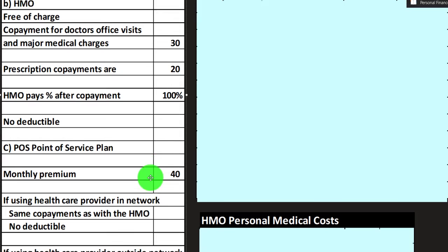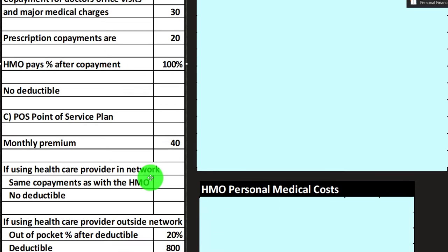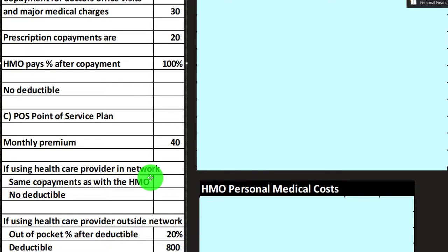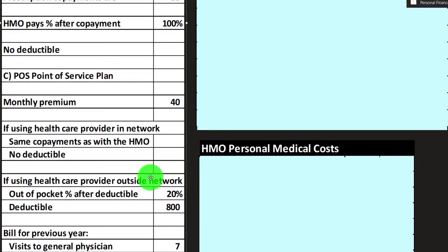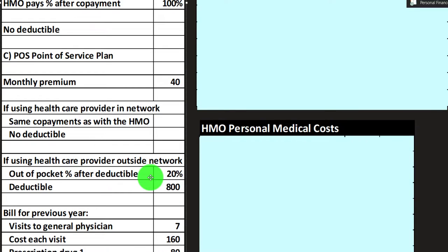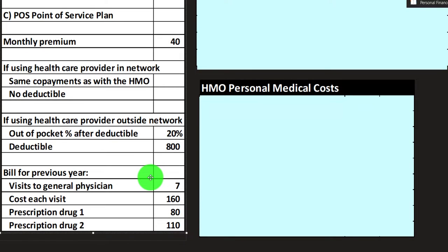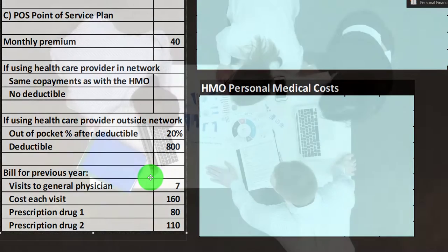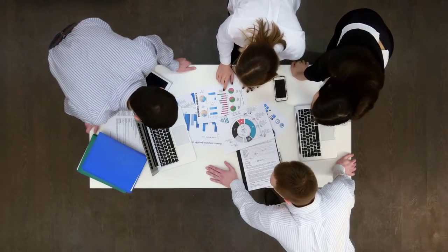Plan C is the POS (Point of Service) plan — a hybrid option. The monthly premium is $40. If using a healthcare provider in-network, the same copayments apply as with the HMO with no deductible. If using a healthcare provider outside the network, out-of-pocket costs are 20% after an $800 deductible.